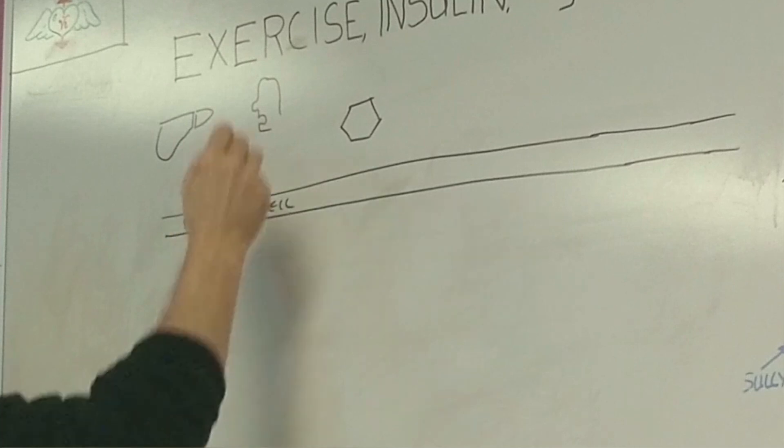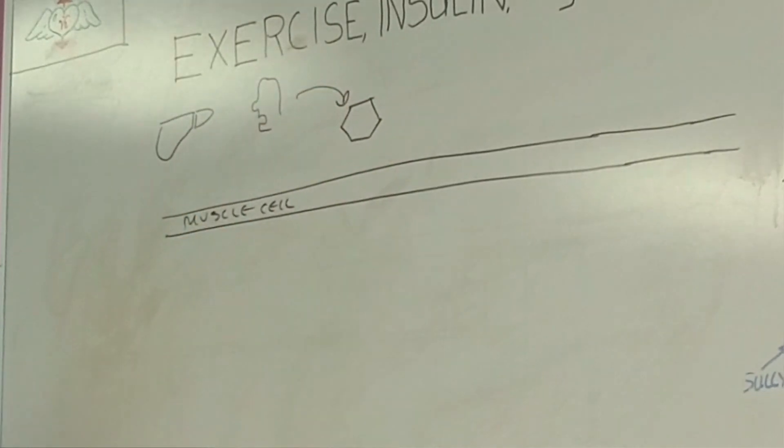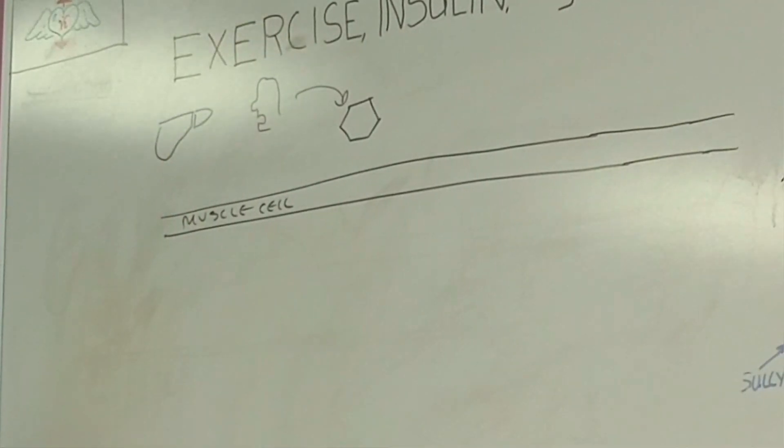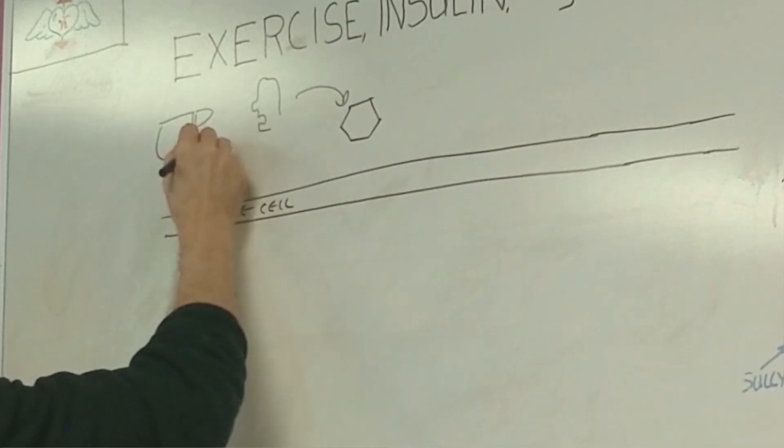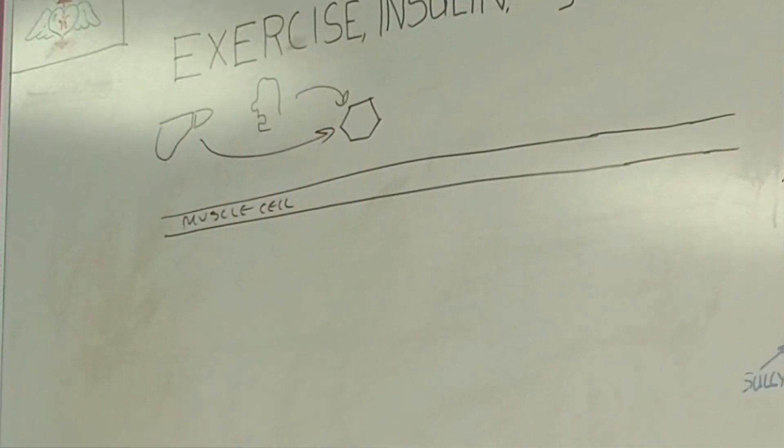Well, first of all, it comes from you eating, right? So that puts glucose into the blood. And also importantly, glucose comes from the liver through two processes called gluconeogenesis and glycogenolysis. So both of these things contribute to blood glucose level.